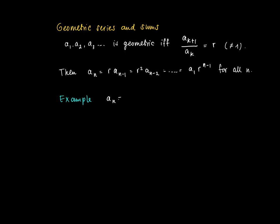So as an example, consider a_n equal to (1/2) to the power n minus 1. Then we clearly see that a_{n+1} divided by a_n, two consecutive elements in the sequence, is (1/2)^n divided by (1/2)^{n-1}, so this equals a half.